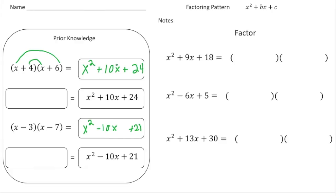So I actually wrote down those products right underneath. What we're going to do now is try to do the opposite — we're going to try to deconstruct or factor x squared plus 10x plus 24. So I'm going to put in our little factor bars here. How did we get that first x squared? We had to multiply x times x. So I know if it starts with x squared, our first terms are going to be an x and an x.